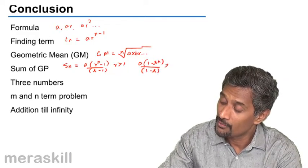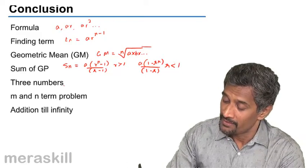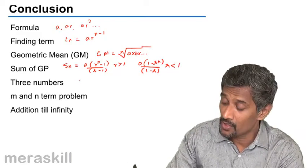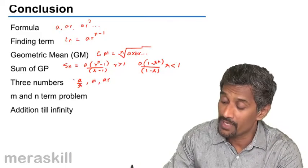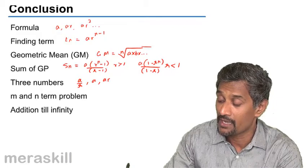Then three numbers: we did a by r, a, ar. If it is five numbers, it's going to be a by r², a by r, a, ar, ar², and so on and so forth.